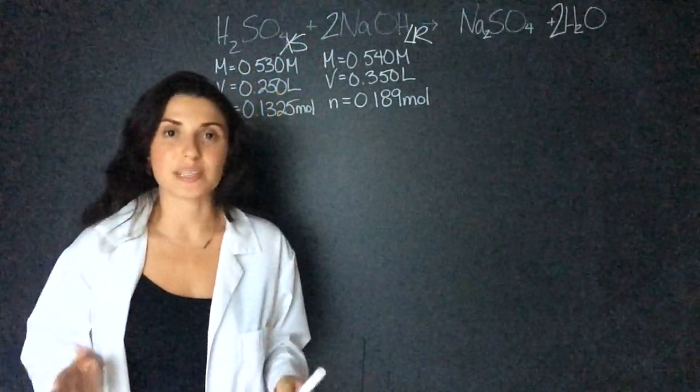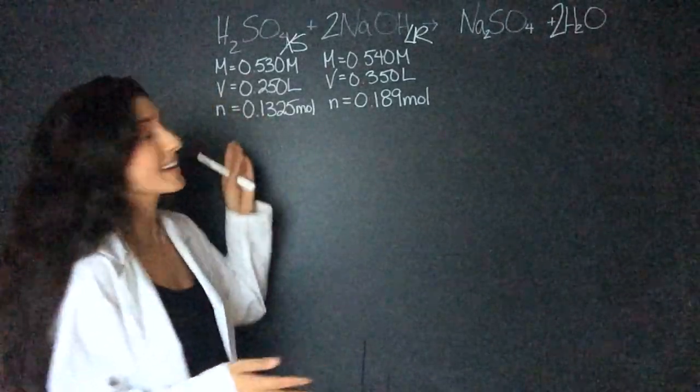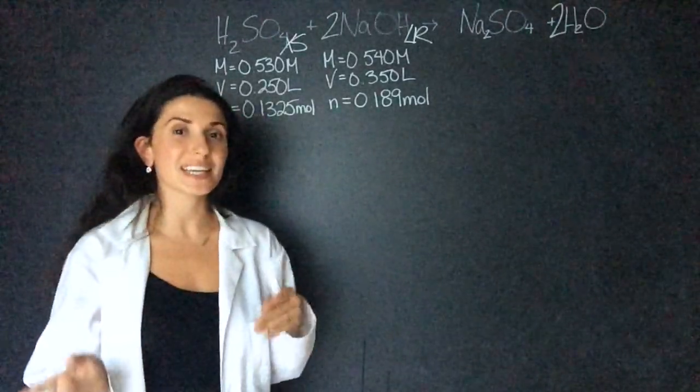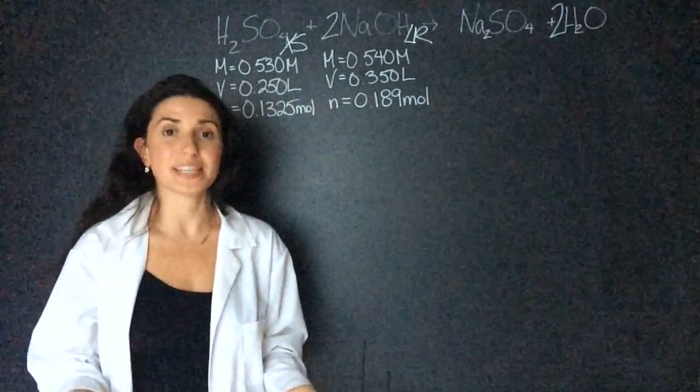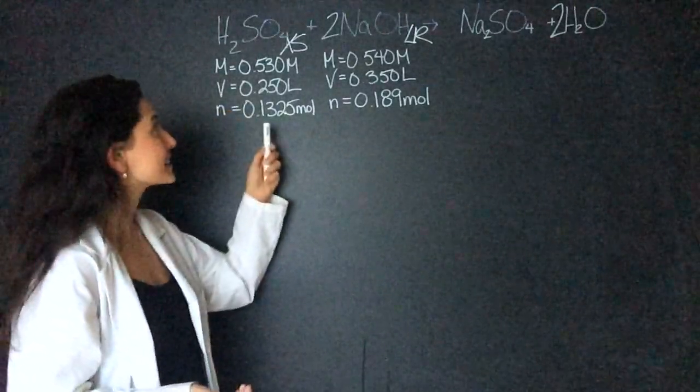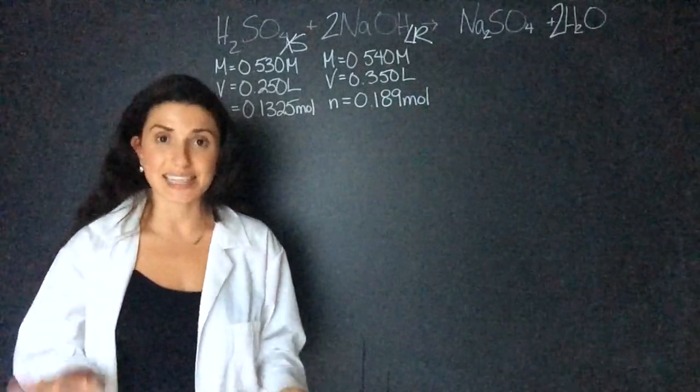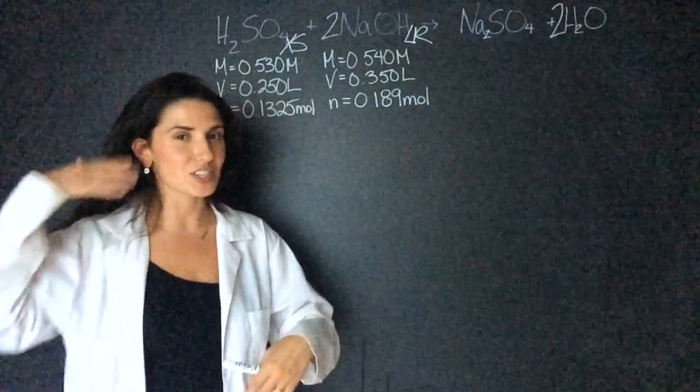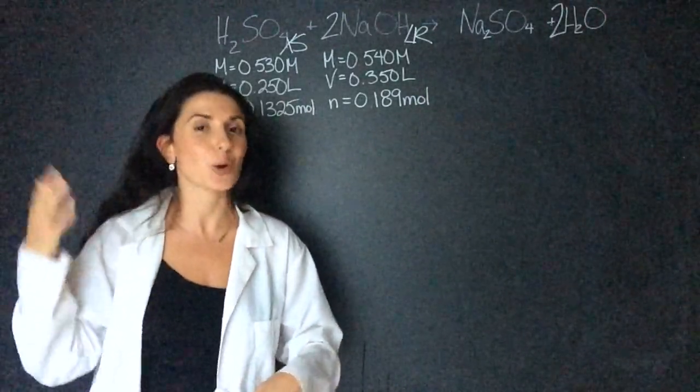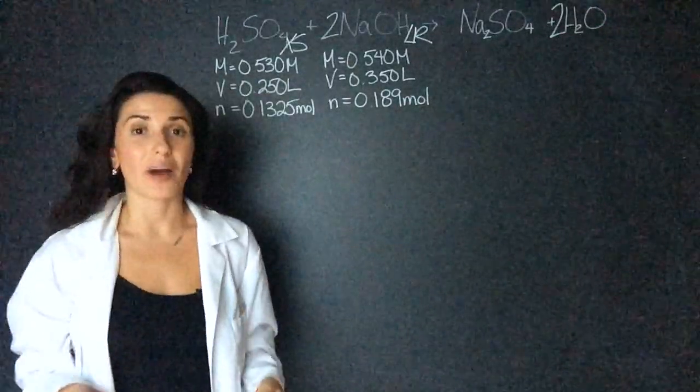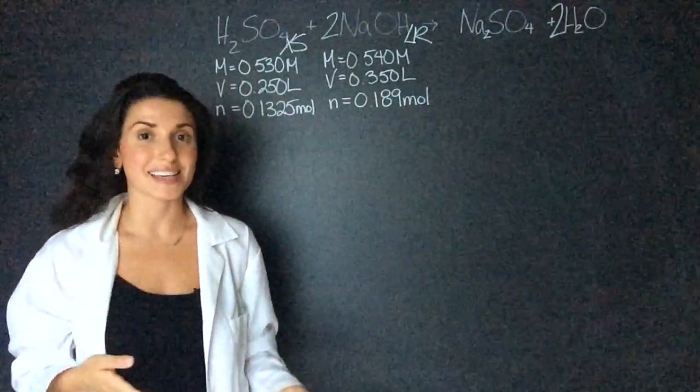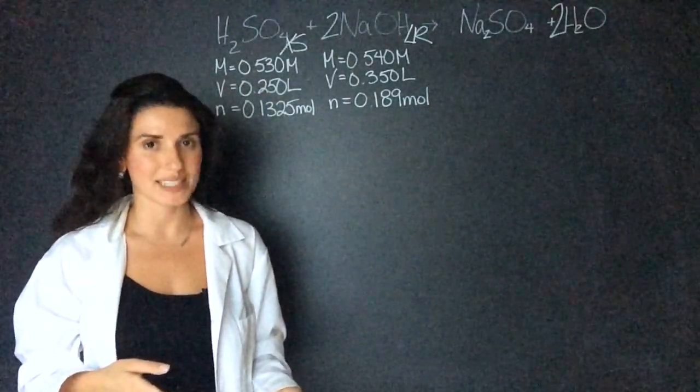So now that I know the limiting reagent and I know the excess reagent I can start to guess which way my pH is going to be. Because the excess reagent is the acid I'm going to expect an acidic pH. So I can already start to think about that on my test to know if I get the right answer.